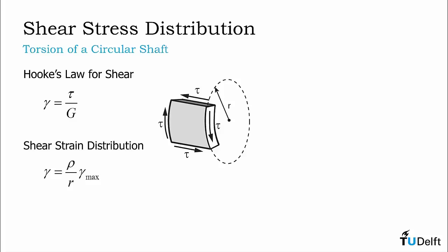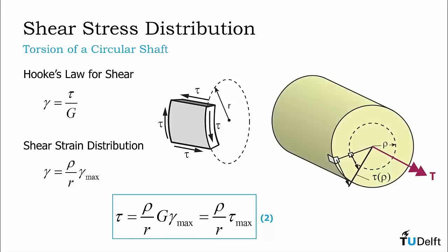Rearranging Hooke's law for shear stress and substituting in our shear strain distribution, we can see that the shear stress distribution also varies linearly from 0 at the center of the shaft to a maximum at the outermost surface. Slightly less obvious is that due to the concept of complementary shear stress and the state of pure shear illustrated in our element in the center of the slide, this shear stress distribution describes the shear stress acting perpendicular to the radius over the cross-section of the shaft, as well as the shear stress acting in the direction of the axis of the shaft as illustrated on the right.